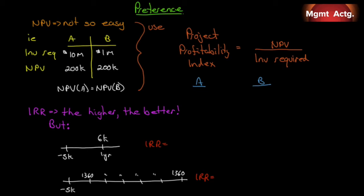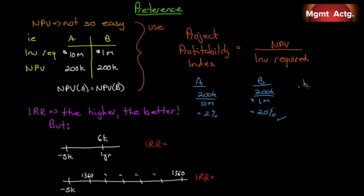Let's try that for A and B. For Project A, net present value is $200,000 and investment required is $10 million, giving us 2%. For Project B, net present value is $200,000 and investment required is $1 million, giving us 20%. So on a Project Profitability Index, we would take B, even though it's only $1 million. The rule for the PPI — the Project Profitability Index — is higher equals better.